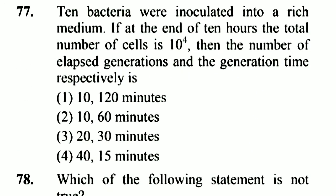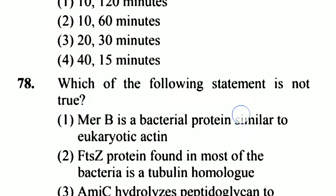Question 77: Ten bacteria were inoculated into a rich medium. If at the end of 10 hours the total number of cells is 10 to the power 4, then the number of elapsed generations and generation time respectively is 10 and 60 minutes. Option 2 is right.